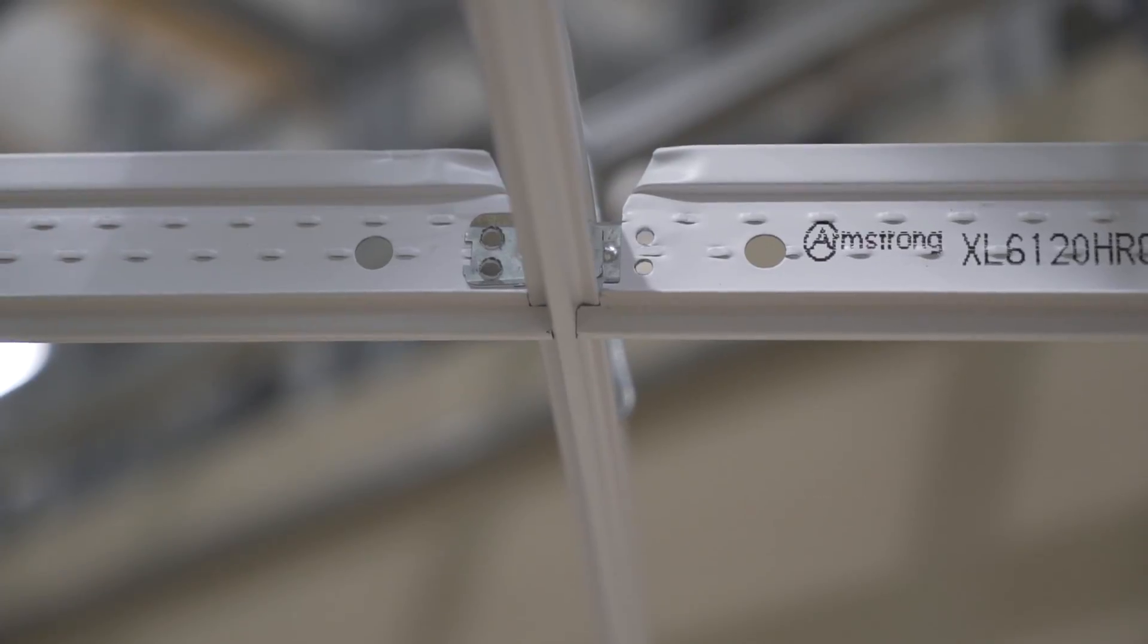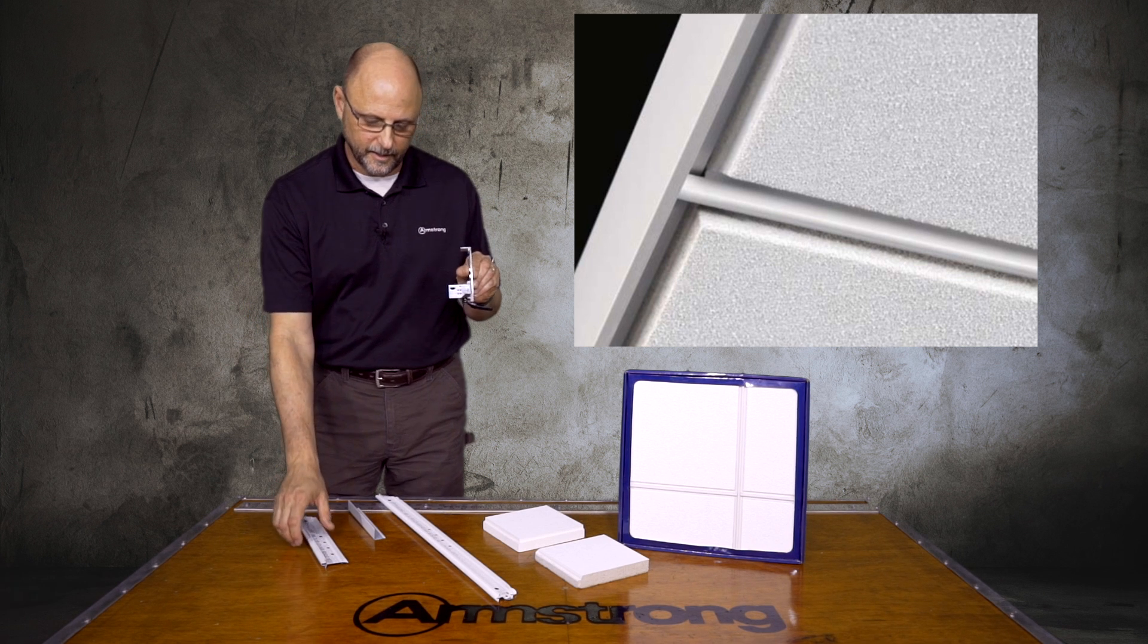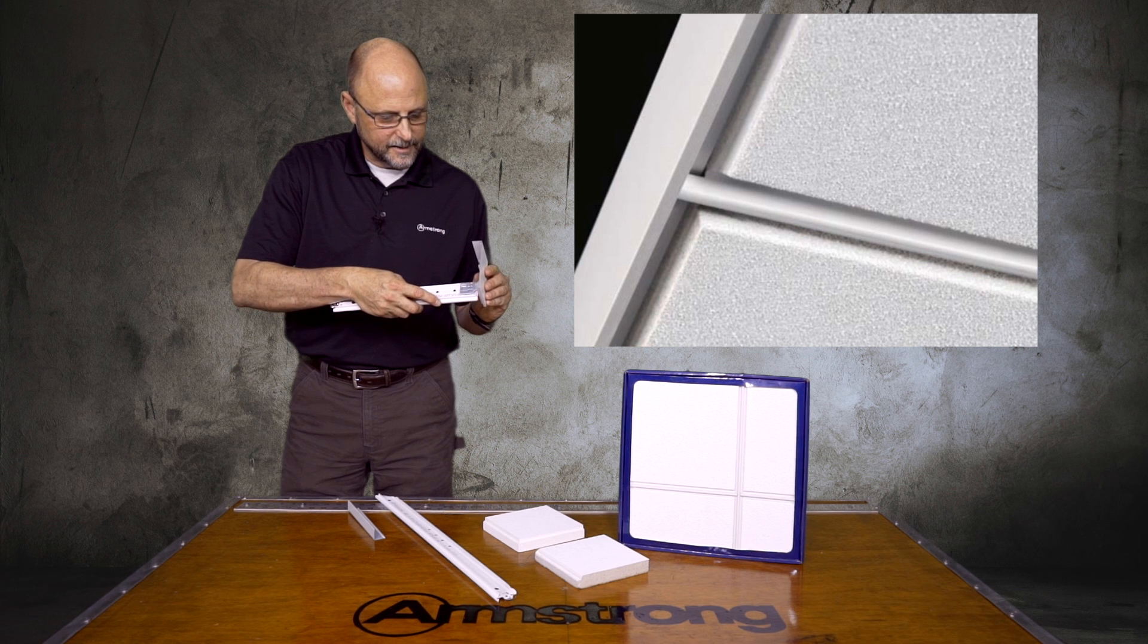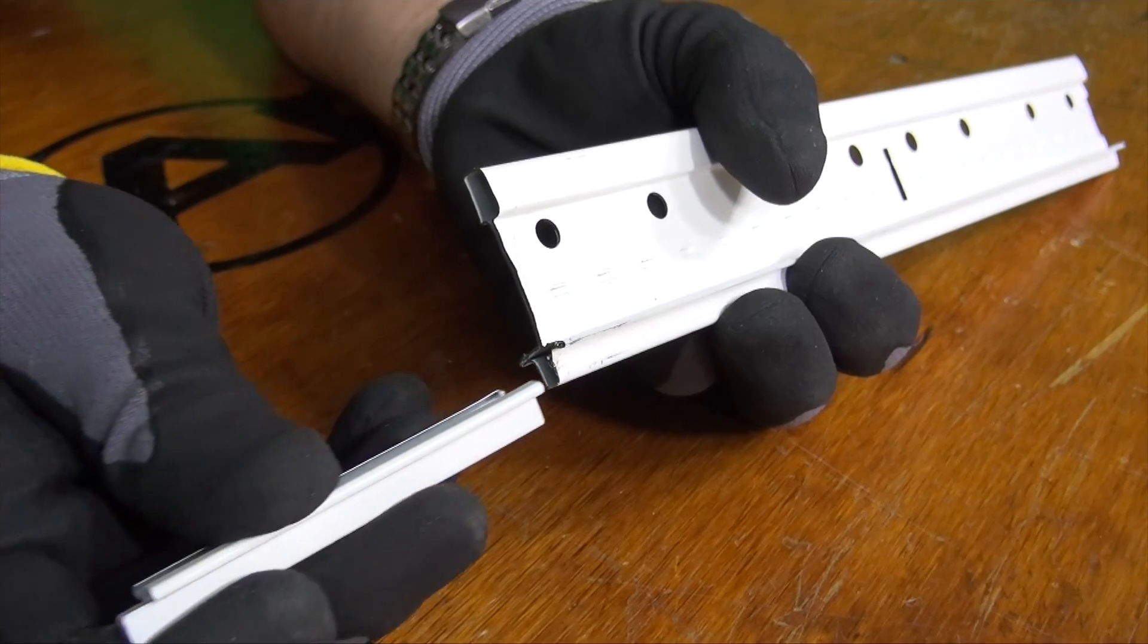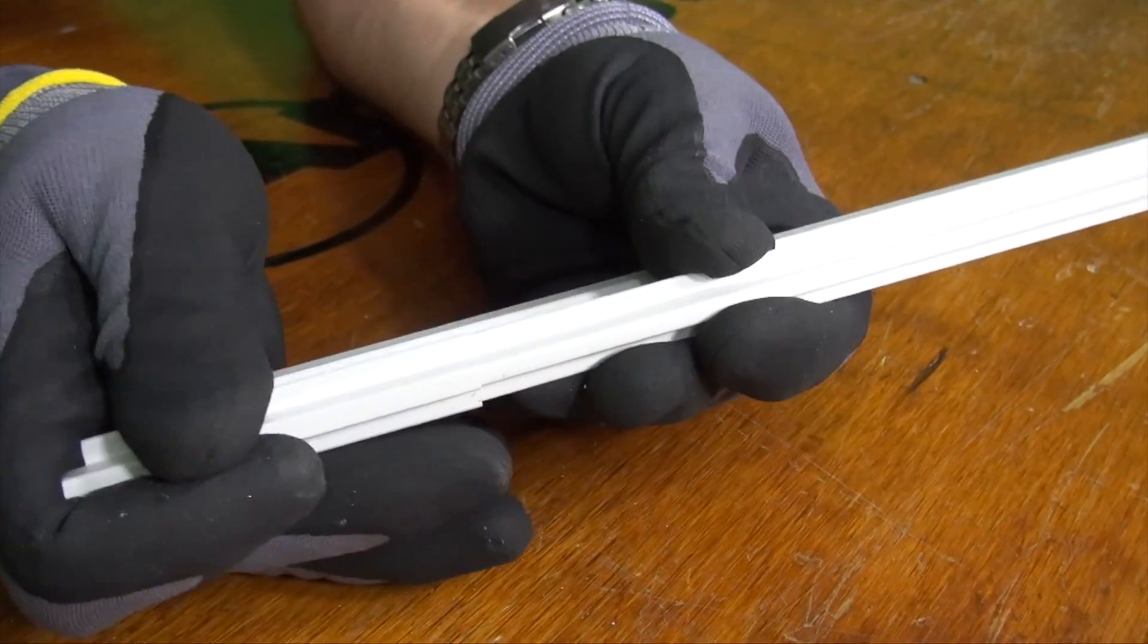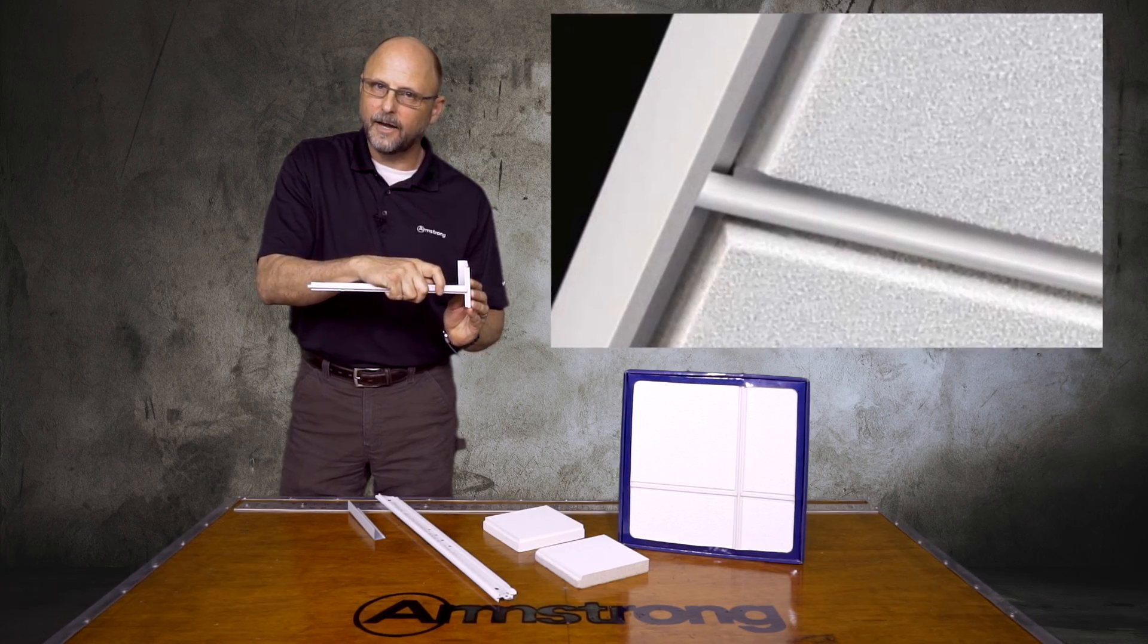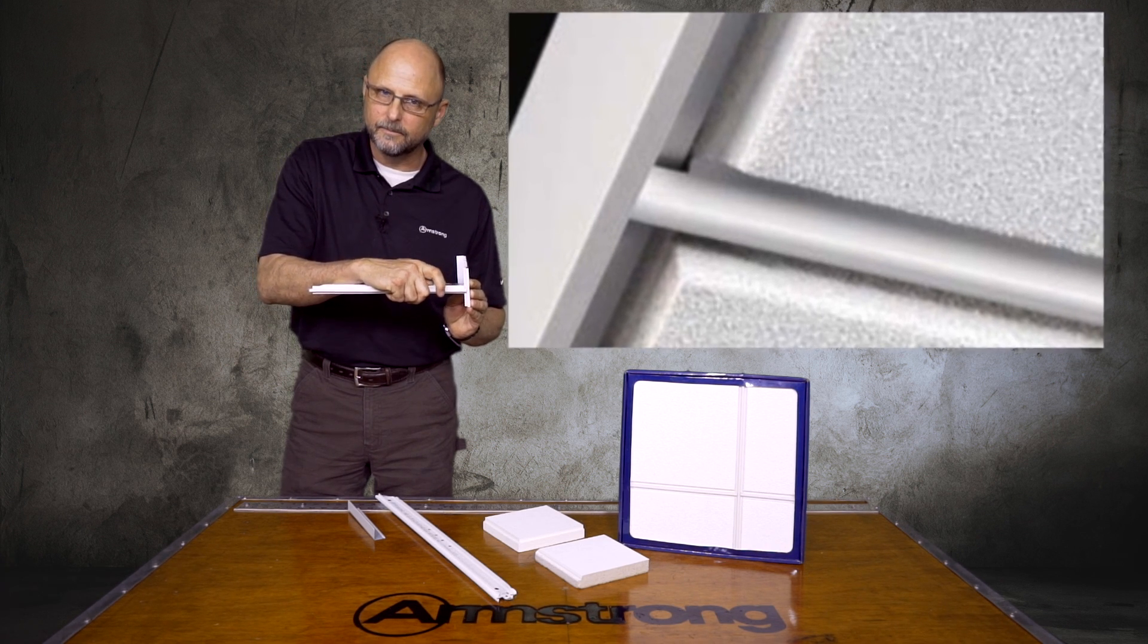Interlude is a complete grid system, so complete that we have an Axiom perimeter trim made specifically for it. You can take a cut piece and tie it into the perimeter trim. This teardrop expansion sleeve slides onto the cross T and extends out to continue the architectural reveal at all main T and cross T intersections, and it also occurs at the trim intersection.